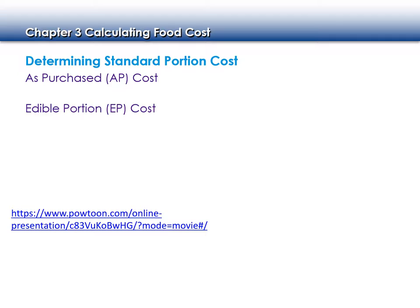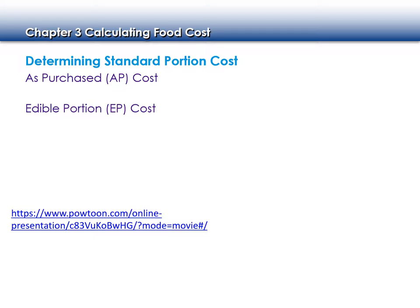AP versus EP: as-purchased versus edible portion. Do we always serve exactly what we buy? No. Brisket is the perfect example — we have to trim it and cook it. Typically brisket has about a 45 to 50 percent edible portion, meaning we lose almost half our product in the preparation and cooking process.